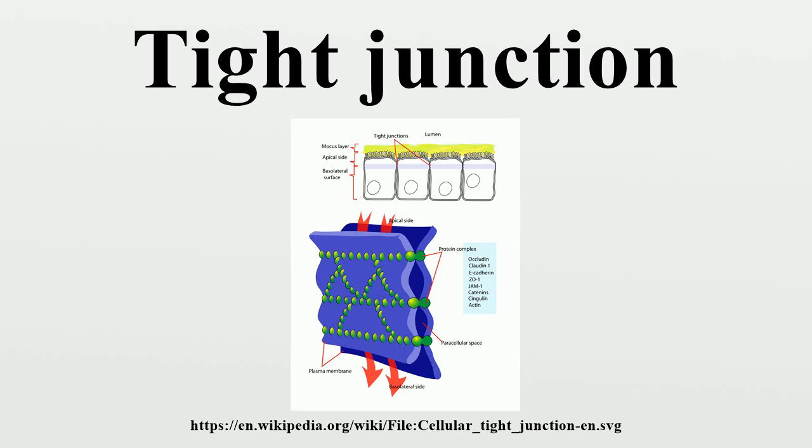Leaky epithelia do not have these tight junctions, or have less complex tight junctions. For instance, the tight junction in the kidney proximal tubule, a very leaky epithelium, has only two to three junctional strands, and these strands exhibit infrequent large slit breaks.